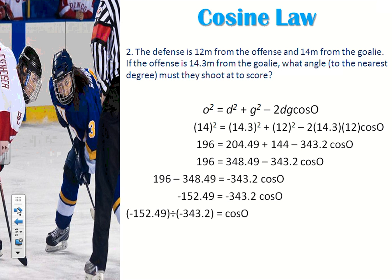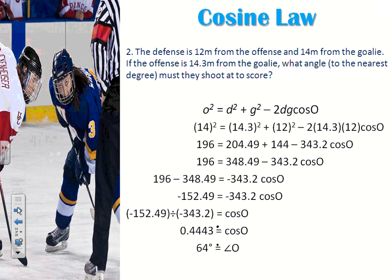We should get a decimal number. I rounded to at least four decimal places to keep it accurate — rounding to 0.5 would chop off too much precision. Then we apply inverse cosine to get O by itself: 64 degrees. Therefore, the person must shoot at an angle of 64 degrees in order to score. So that's the cosine law — how to find a side and how to find an angle. If you want to memorize the rearranged formula to find an angle to make it easier, that's definitely something you can do as well.